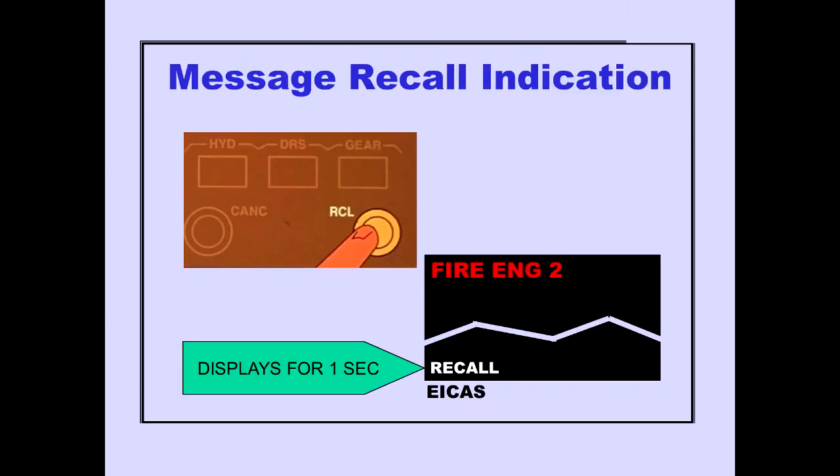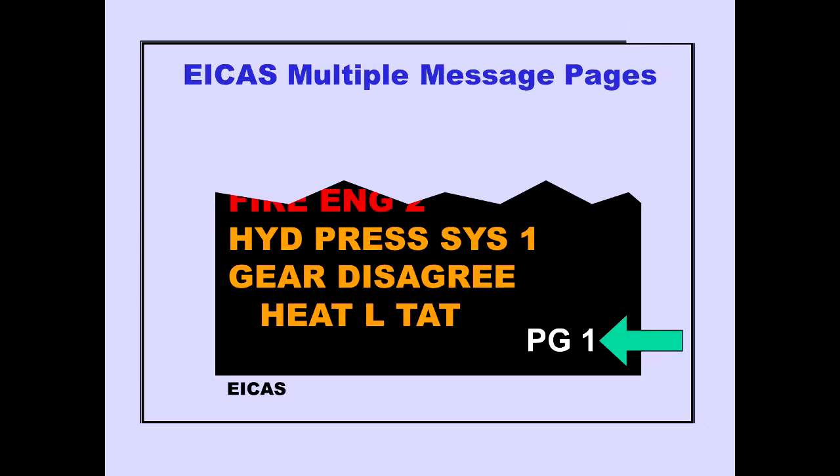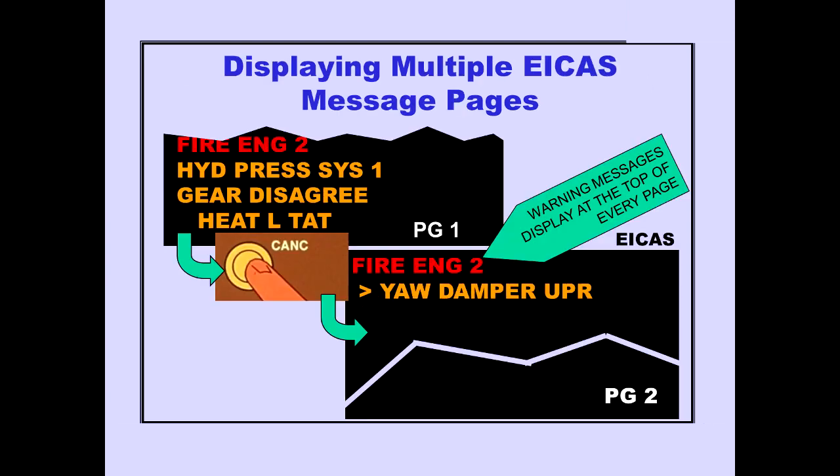Pushing the recall switch also displays a recall message at the bottom of the message area for one second. When more messages exist than can be displayed on one page, a page number is displayed below the message area. Pushing the cancel switch displays multiple messages one page at a time.